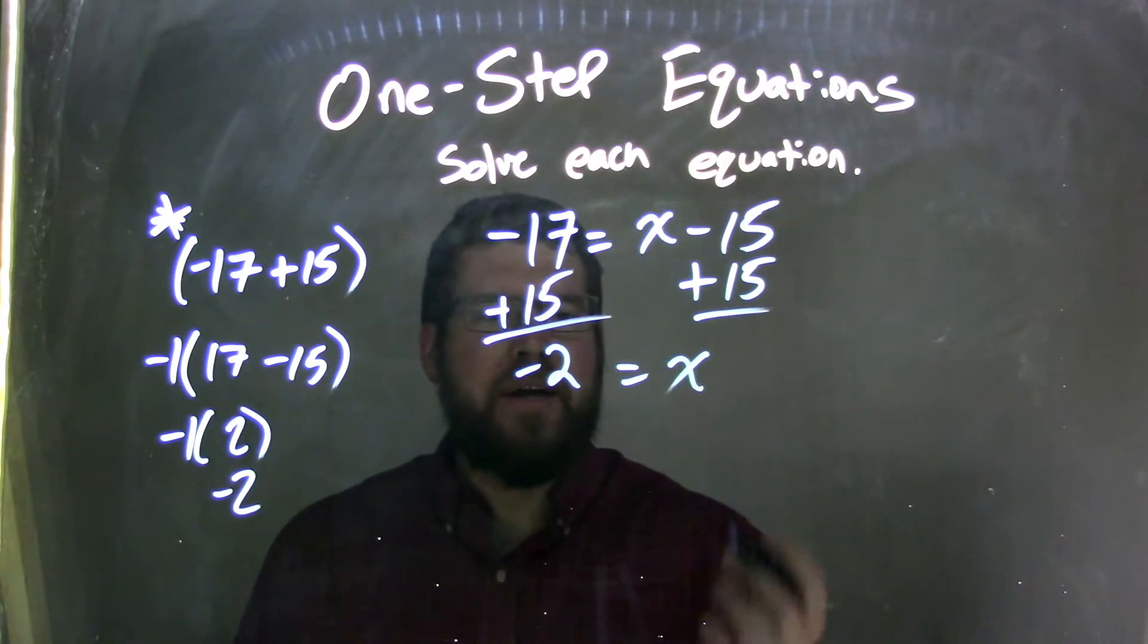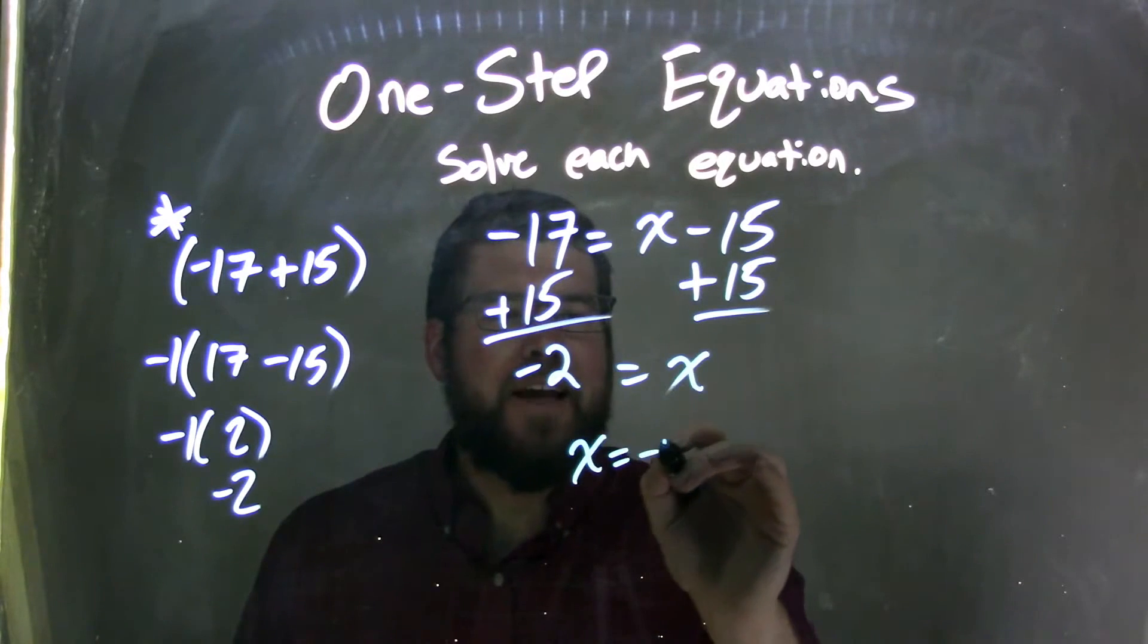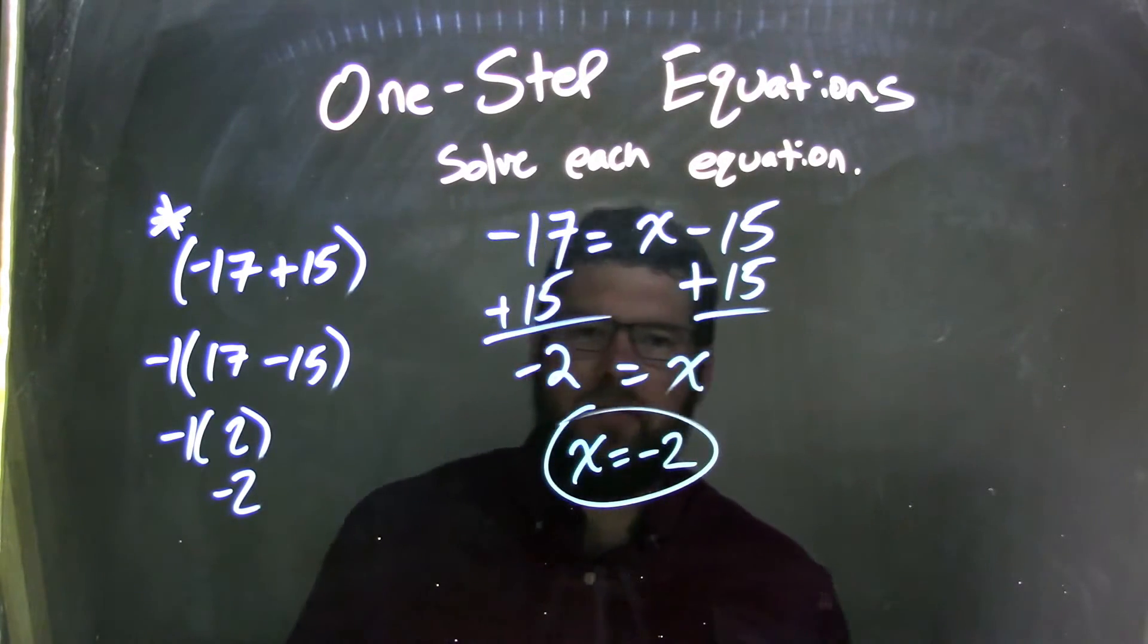But it's just x now. So let's rearrange it, put x first, so x equals negative 2, and that is my nice, neat final answer.